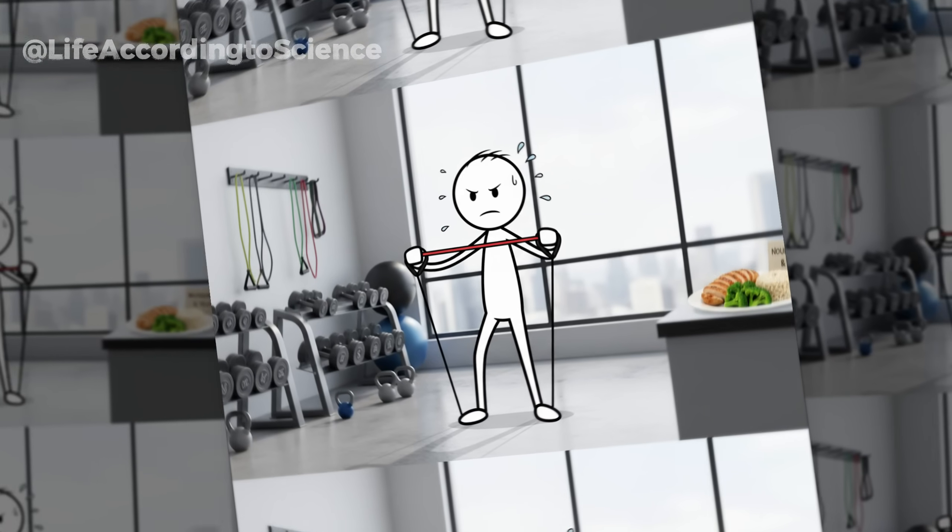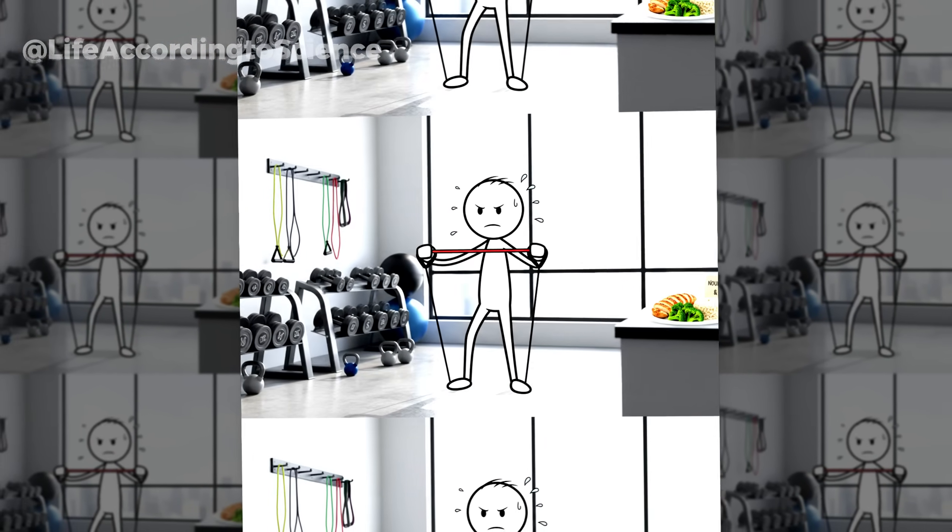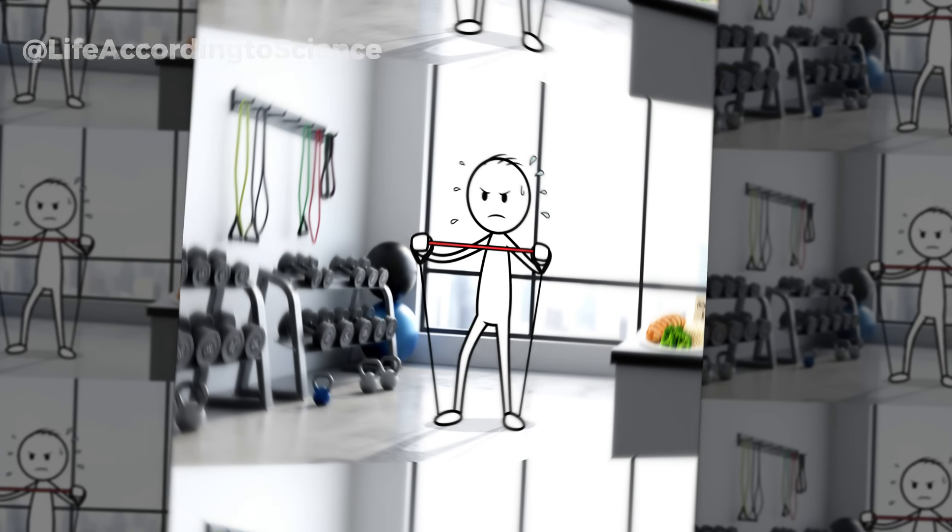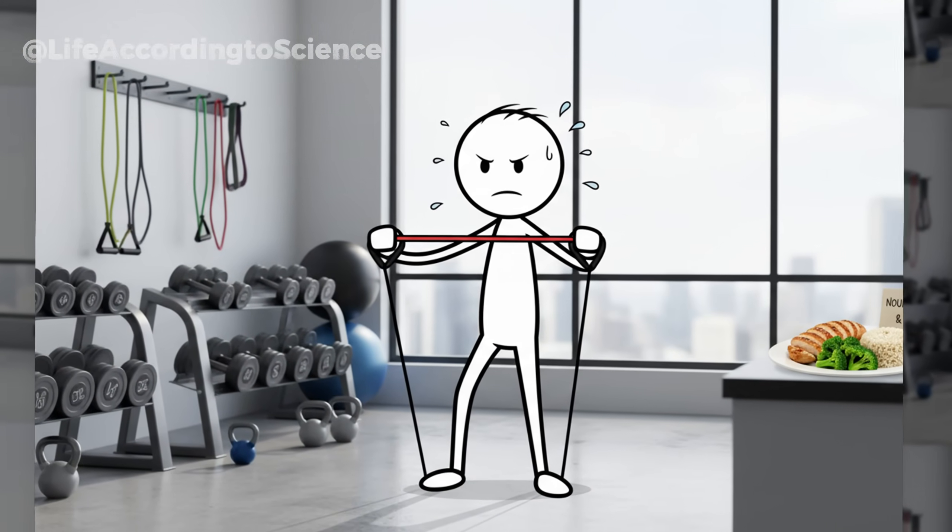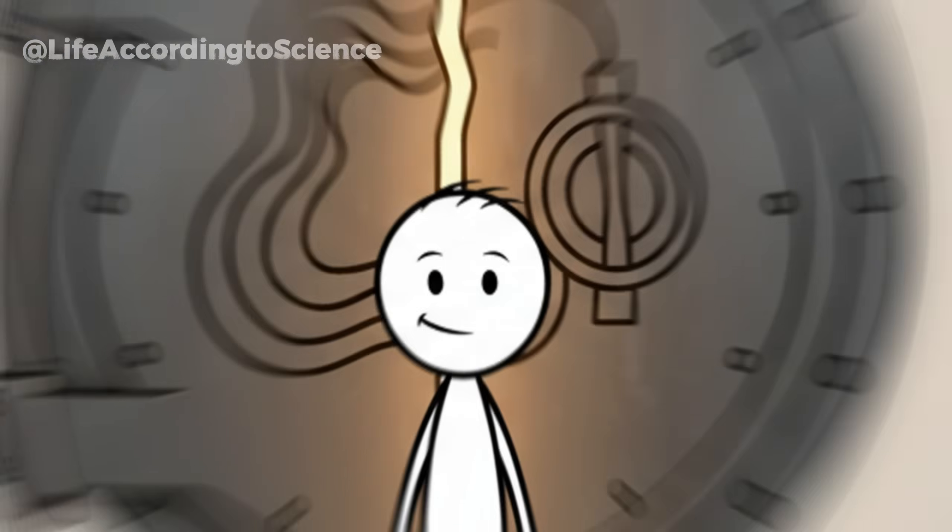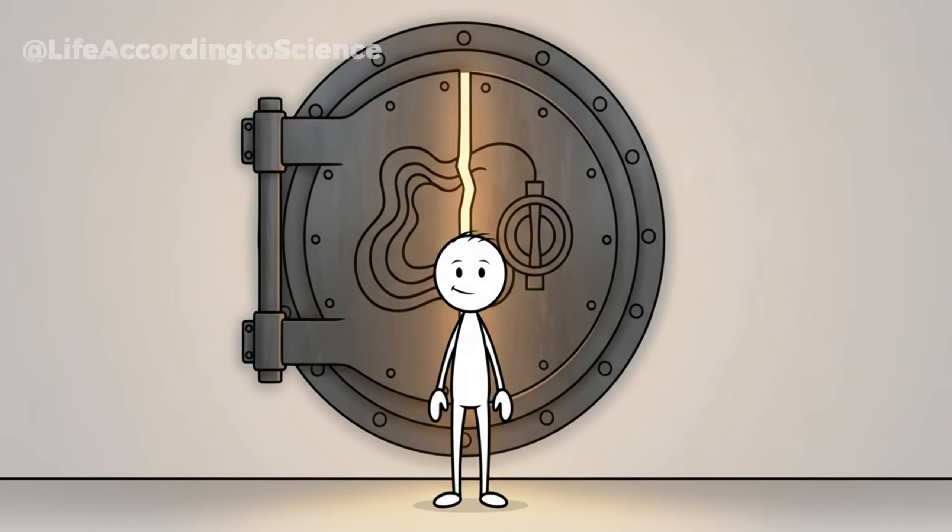The smarter way isn't to starve your body. It's to rebuild trust with it. Gradual, sustainable calorie reduction combined with resistance training and adequate protein tells your body it's safe. And when your body feels safe, it lets go of what it was once trying to save.